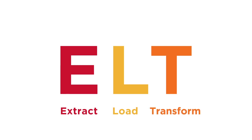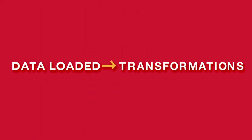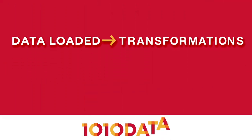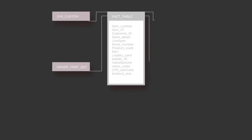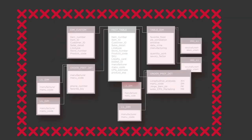For ELT — extract, load, transform — transformations occur after data is loaded, and the 1010Data platform does the heavy lifting. With a schema-centric database, constraints prevent you from loading whatever you want into predefined tables and columns. In 1010Data's schema-less database, there's no predefined logical schema — data makes its own schema as it's loaded.